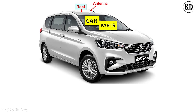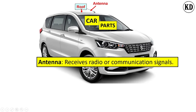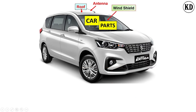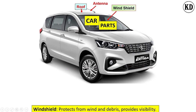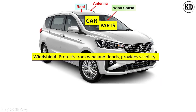The next component name is the antenna. The function of the antenna is to receive radio and communication signals. The next component name is the windshield, and its function is to protect against wind and external elements as well as provide visibility.